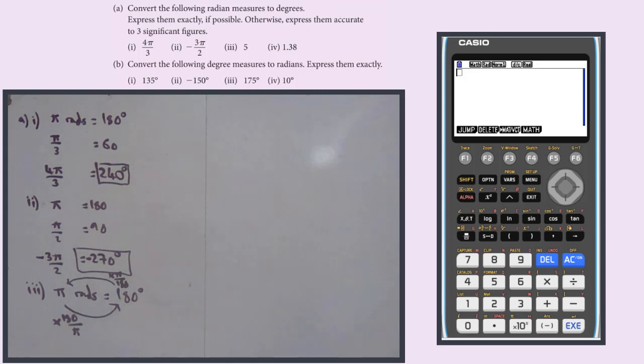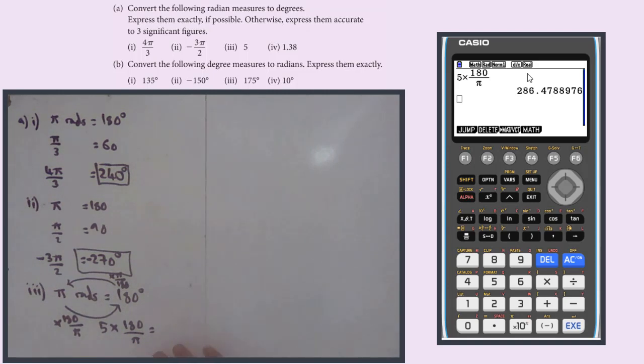So what I need to do is turn radians into degrees. So I need to take the number 5 and times it by 180 over π. 5 times 180 over π. And that is, it wants it to 3 significant figures. That is 286 degrees.